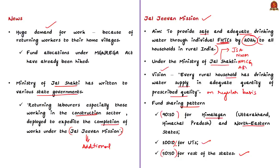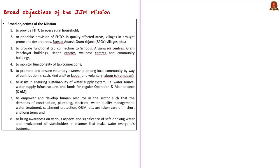The broader objectives of Jal Jeevan Mission include: providing functional household tap connections to every rural household; prioritising provision in quality-affected areas, villages in drought-prone and desert areas, Sansad Adarsh Gram Yojana villages; providing functional tap connections to schools, Anganwadi centres, Gram Panchayat buildings, health centres, wellness centres, and community buildings; monitoring functionality of tap connections; and promoting voluntary ownership among local communities. The mission also assists in ensuring sustainability of water supply systems — including water source, supply infrastructure, and funds for regular operation and maintenance.